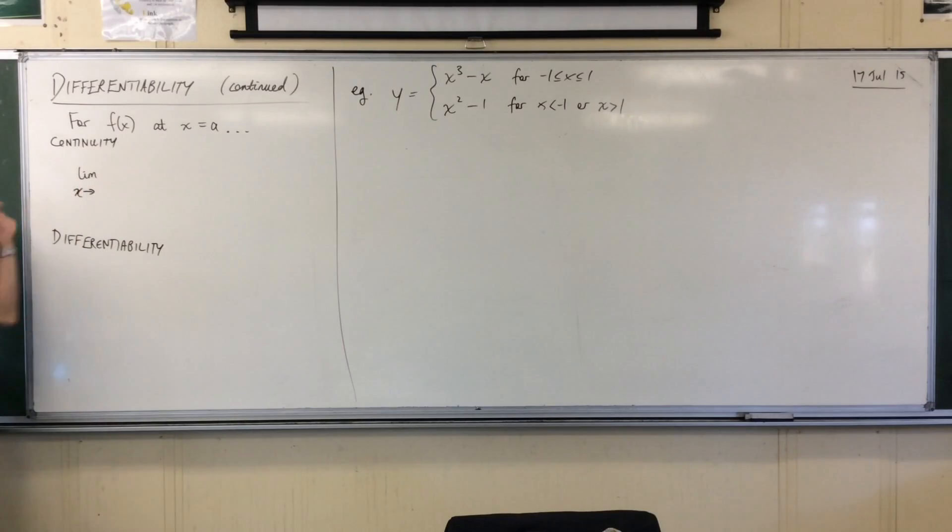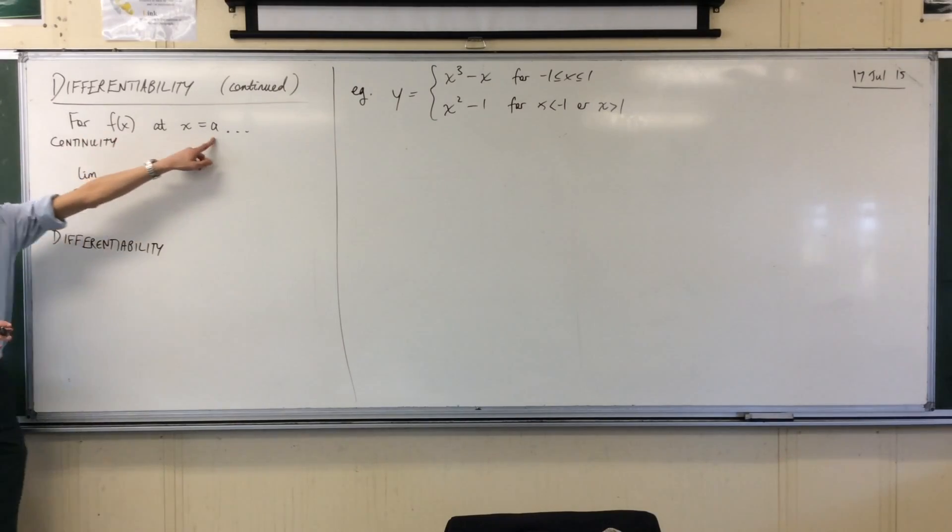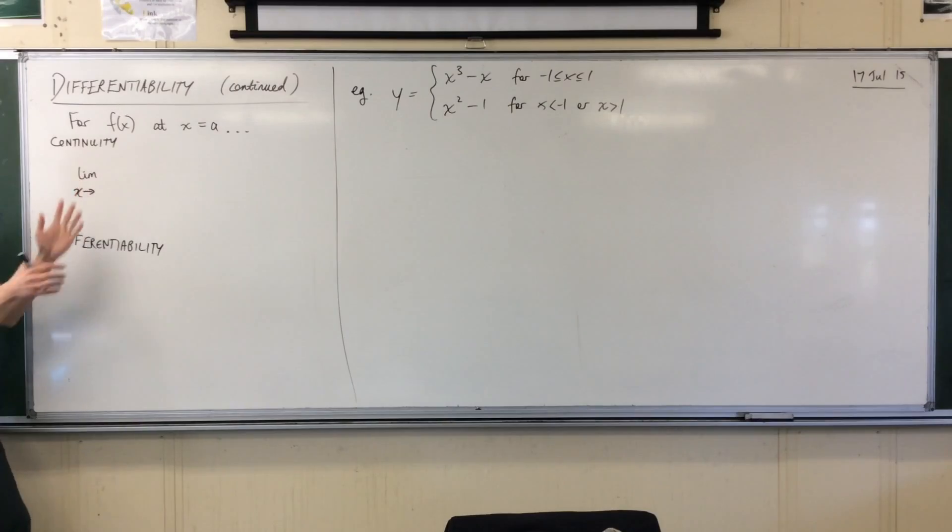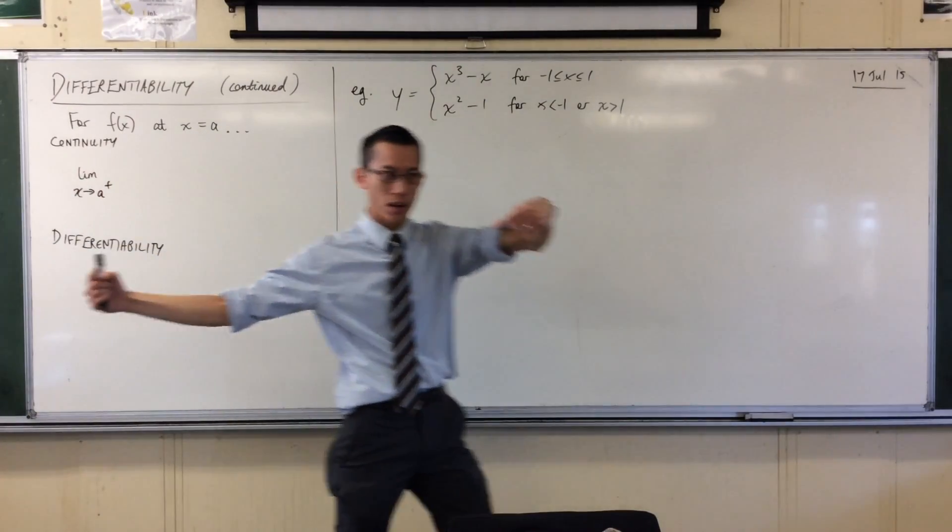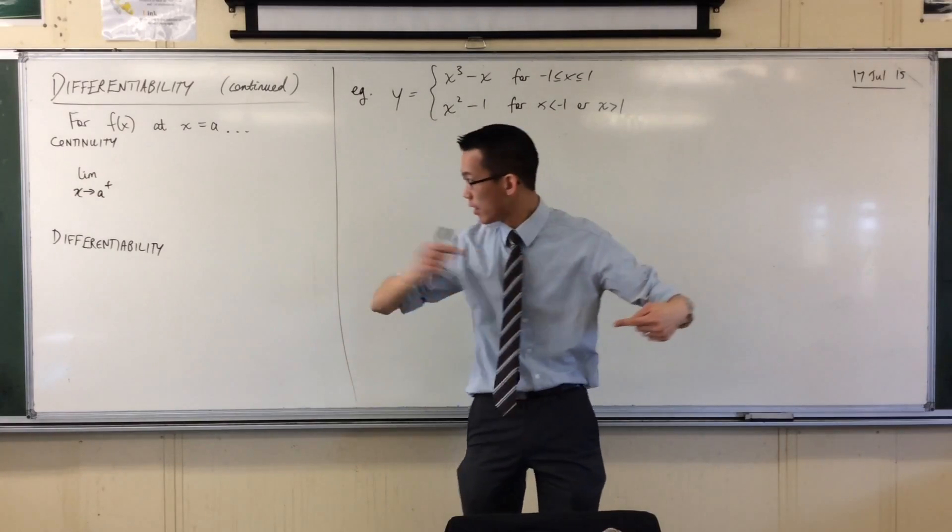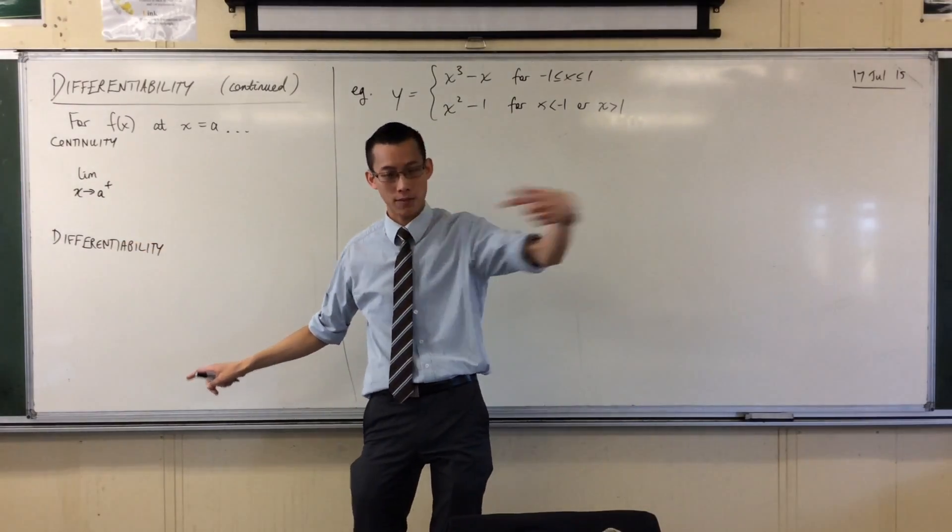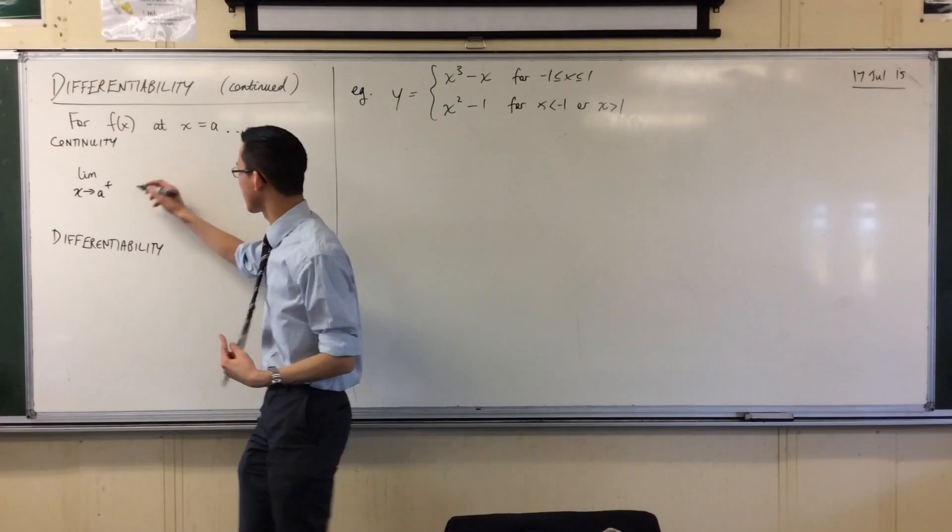So here's what's happening. We want to think about this certain point, we want to get closer and closer, that's what the limit's about, to that point. But thank you Doris, we need to look carefully at what happens from one direction versus the other. So a plus means come from higher values, that's from the right.